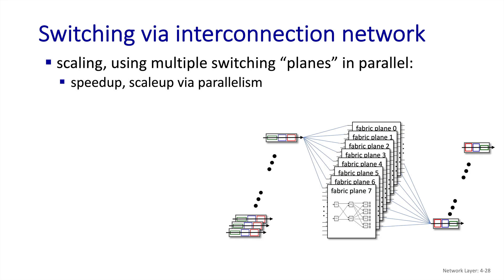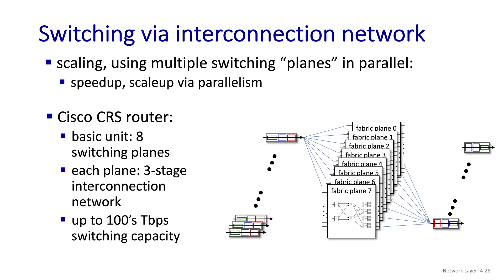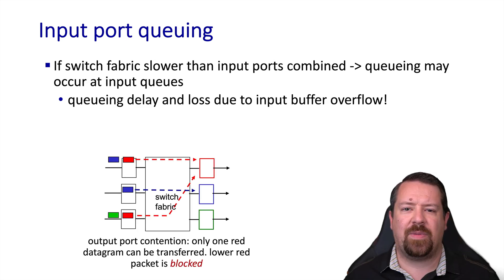Additional parallelism is possible by using multiple switching planes in parallel. For example, in a Cisco CRS router, the basic unit includes eight parallel switching planes, each with three stages. But this can support up to hundreds of terabits per second of switching capacity. Now let's go back and revisit something mentioned a few slides ago, which is that input port queuing is not desirable. Let's see why.